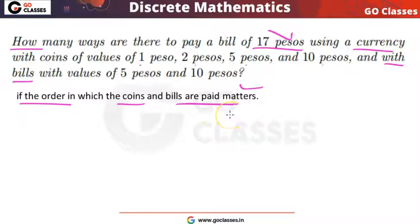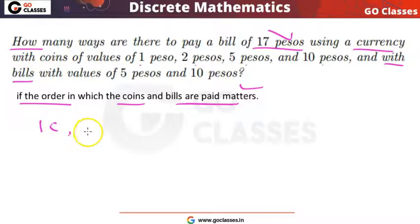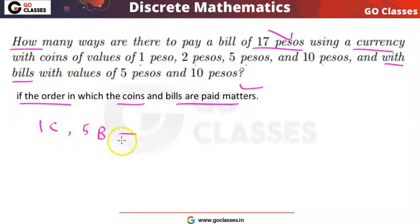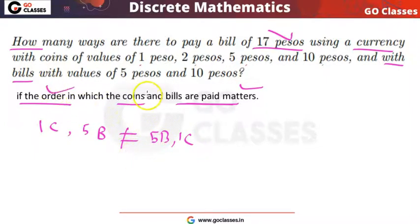For example, if I give a 1 peso coin and after that give a 5 peso bill, this is different from when I give the 5 peso bill first and then the 1 peso coin. So the order in which coins and bills are paid matters.